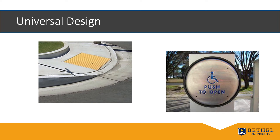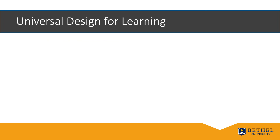Universal Design is about making the world a more functional place for everyone. When we connect that concept to learning, we get Universal Design for Learning. The question is: how can we design learning experiences in which all students, including those with learning exceptionalities, can access and engage? While we might incorporate an accommodation for a student who needs it, it can also benefit other students. Technology is a common example of a tool that can level the playing field for all students to engage in learning.